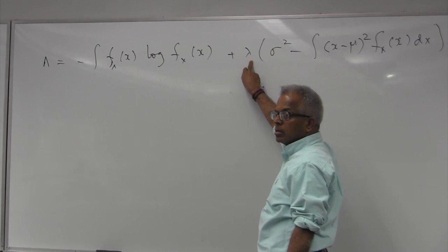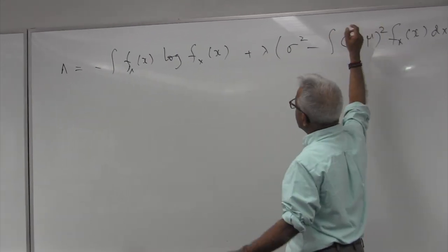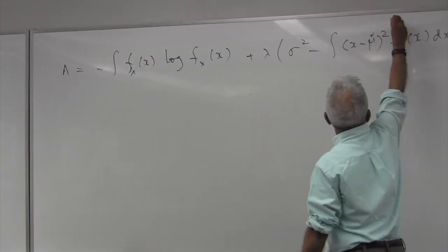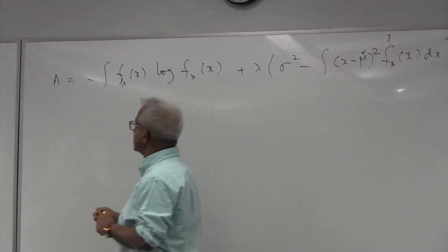This is unknown. And of course, the mu is known. f is unknown. We are trying to find out. We want to maximize this.